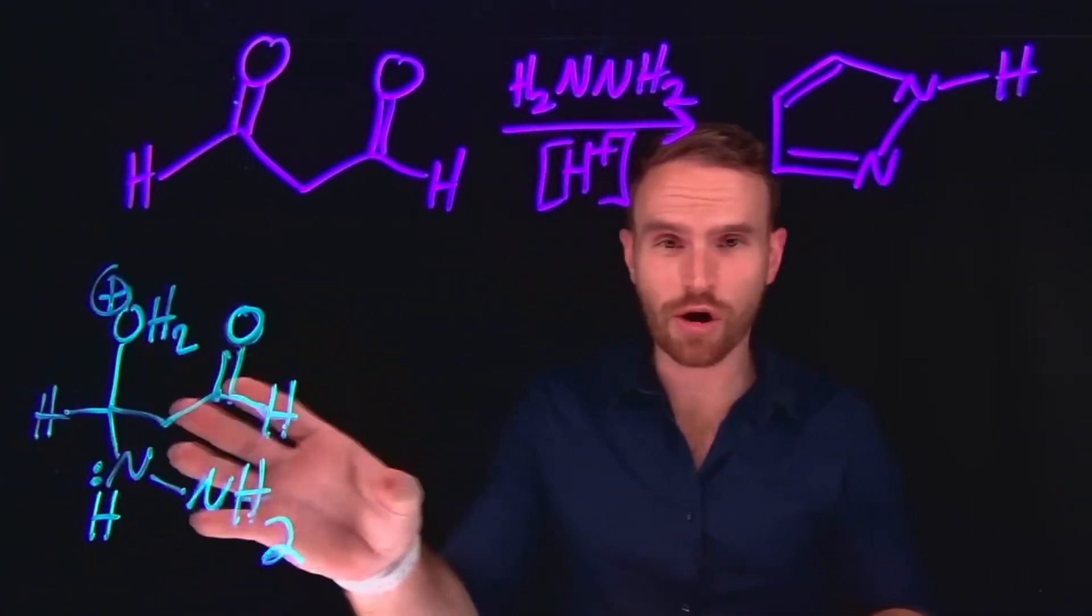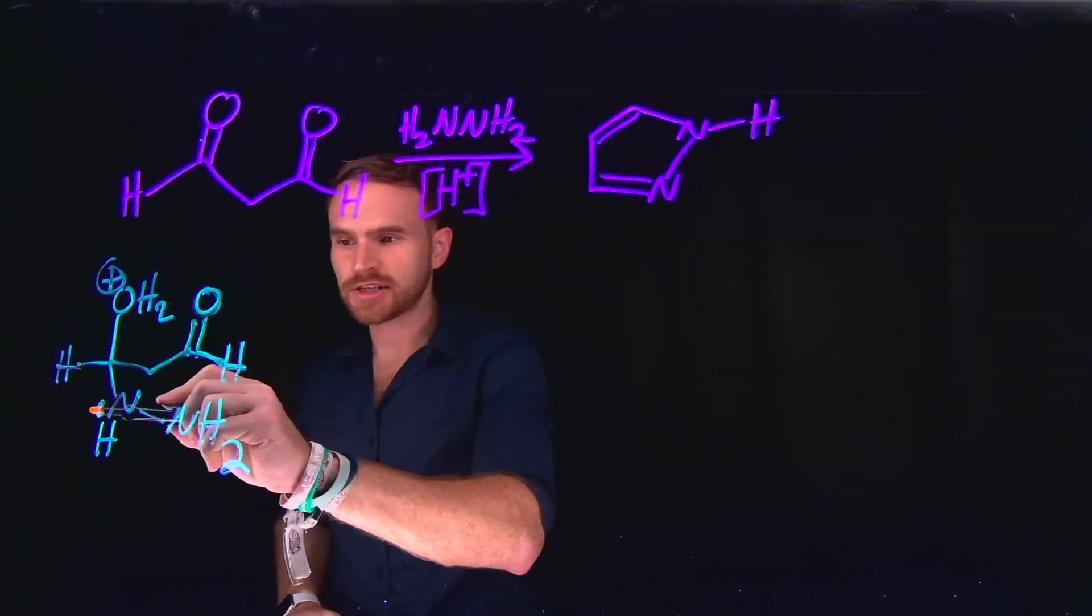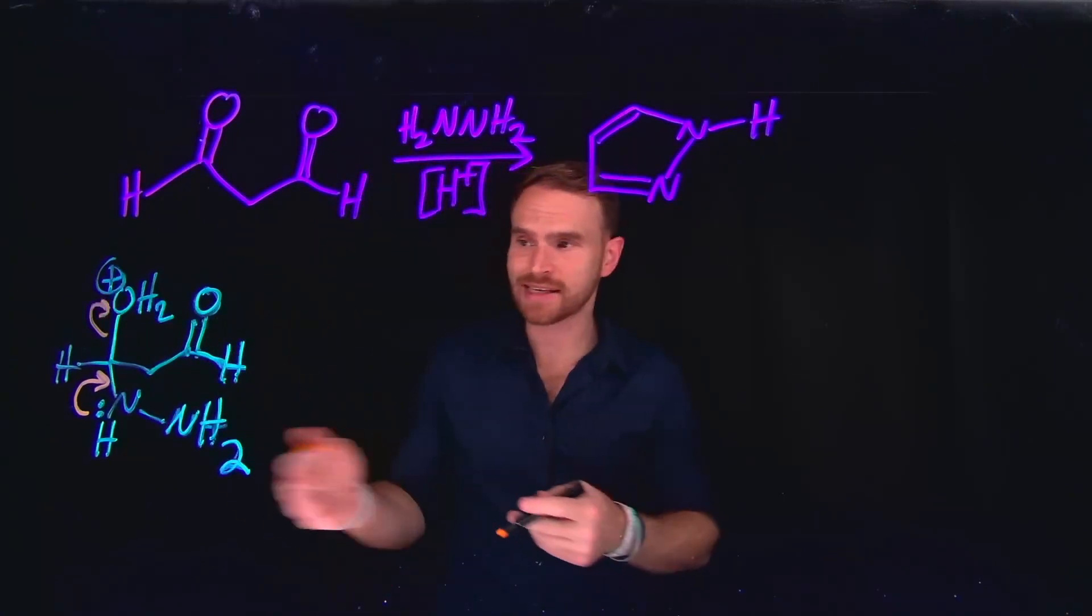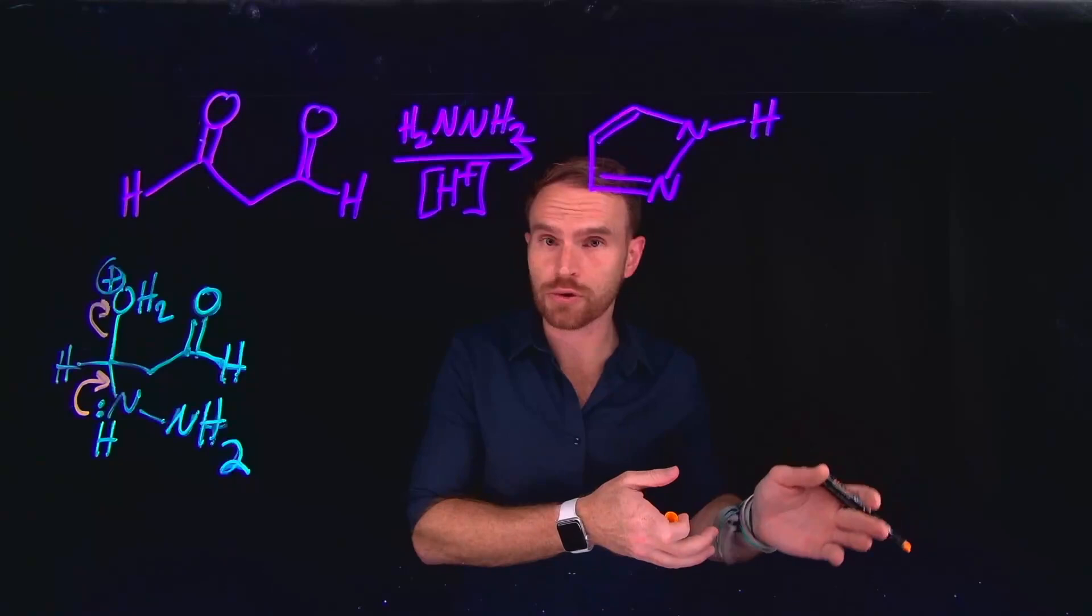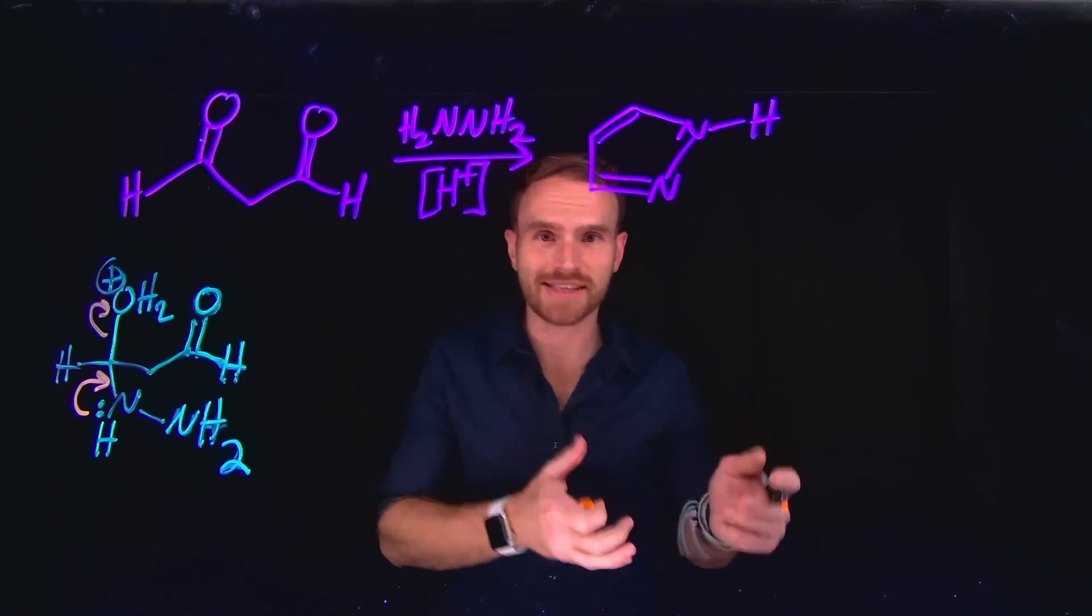So again, all I've done is redrawn that last intermediate so that I have more room to work with. And the next step is actually going to be the formation of an iminium ion. And in fact, this is the classic example of an addition elimination reaction to go through an imine intermediate when trying to turn ketones and aldehydes into imines.